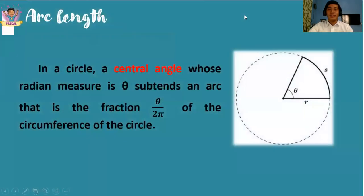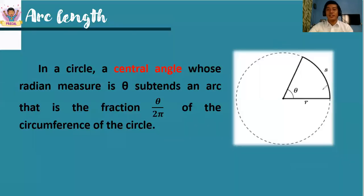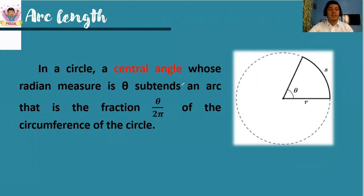Given a central angle theta, notice that it subtends a certain arc. That arc is represented by small letter s. So we need to find the arc length of this circle. Given the radius of a circle and theta, we need to consider the central angle as theta divided by the complete revolution, which is 2 pi.